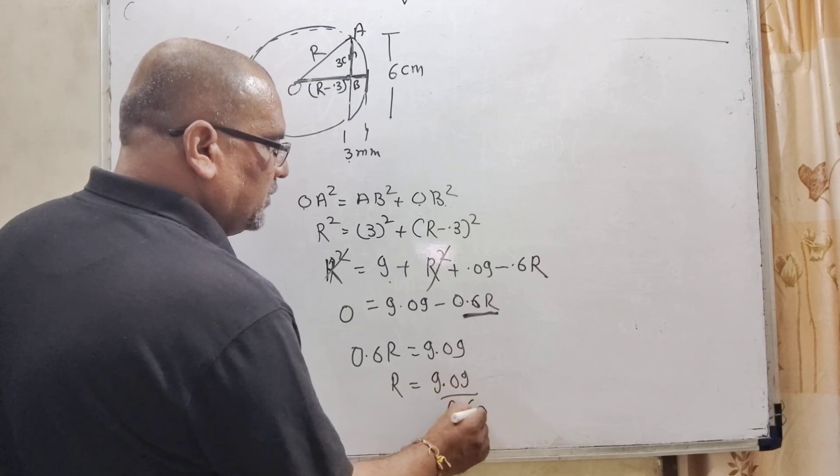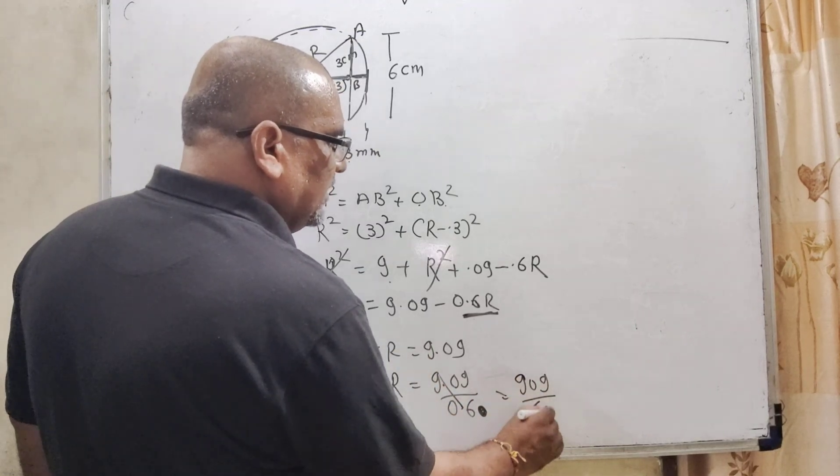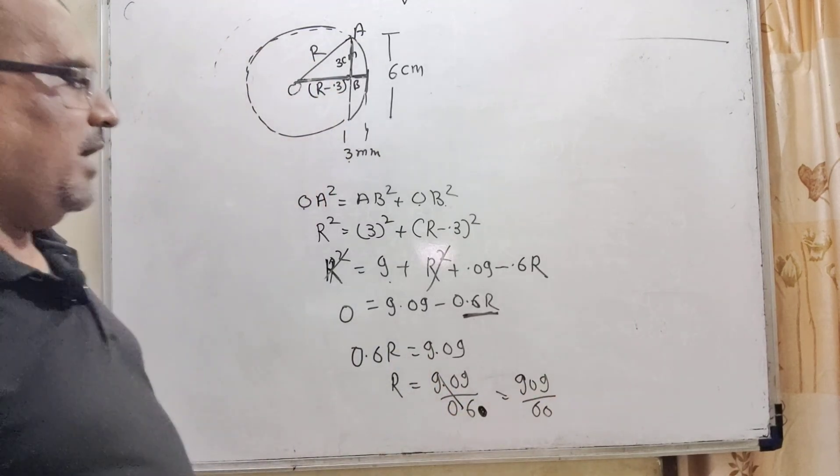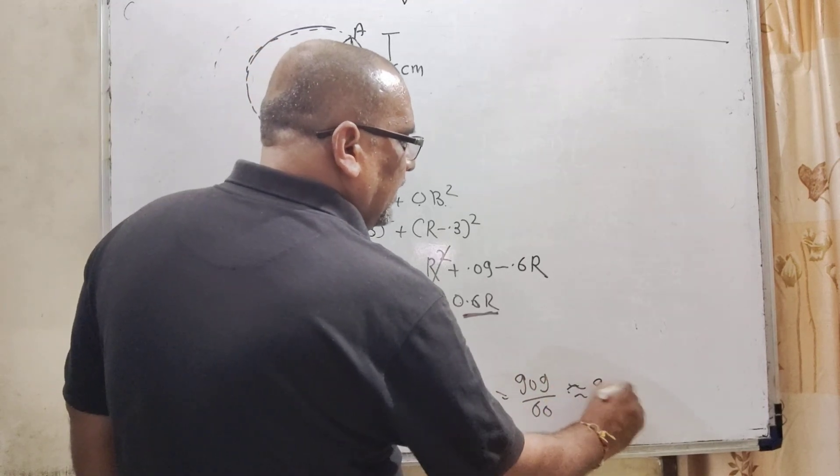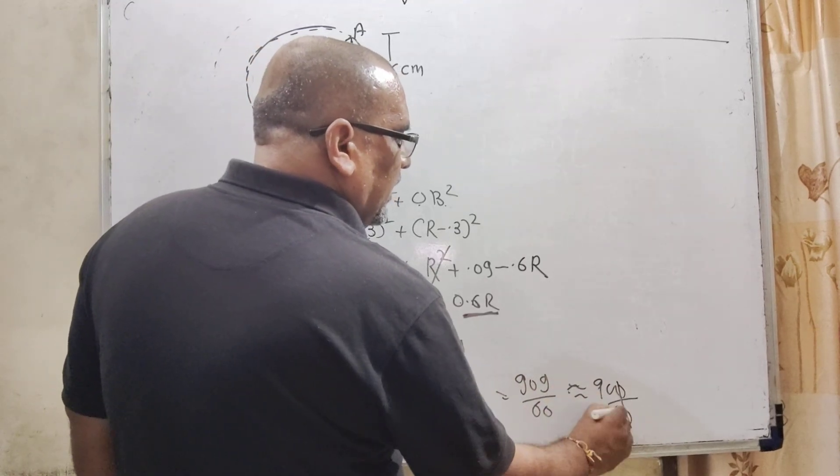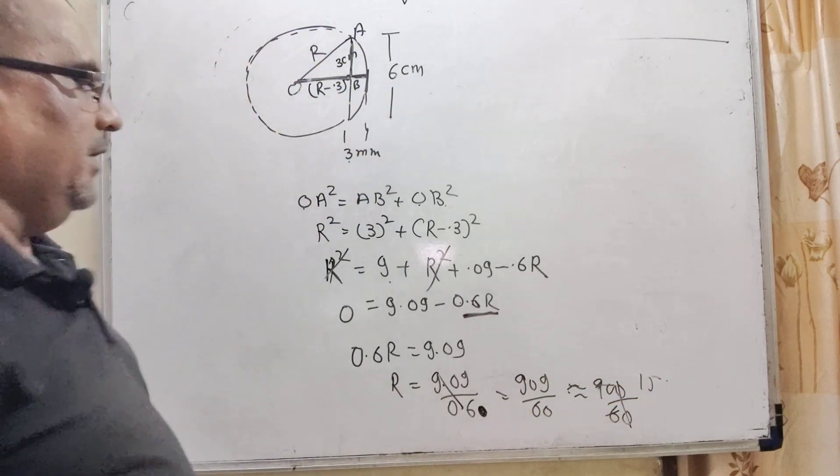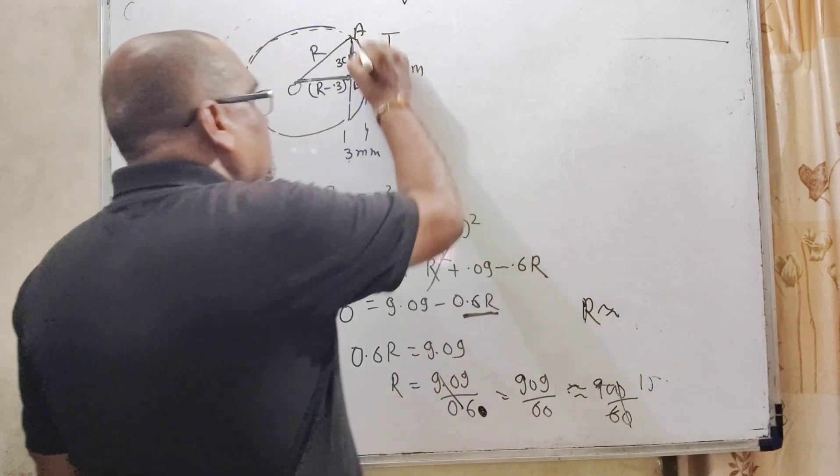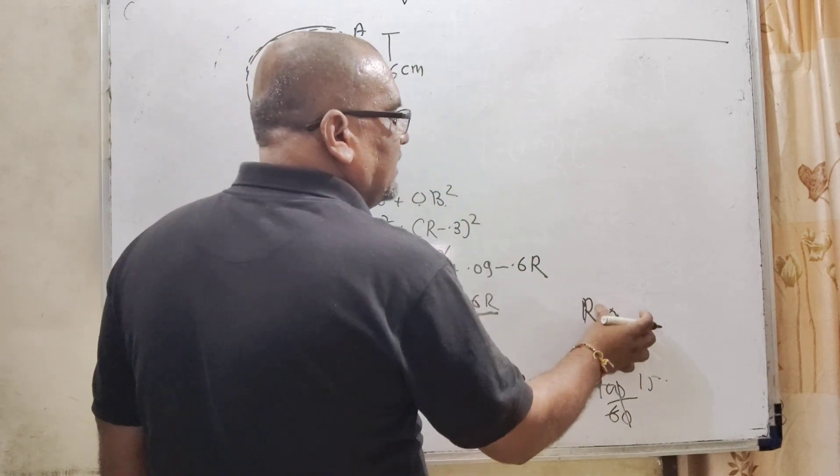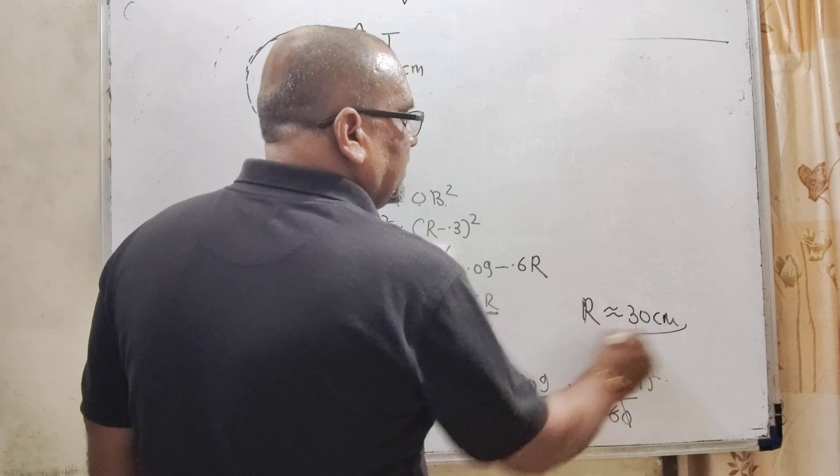Then R = 9.09 ÷ 0.6. After decimal there are 2 numbers, so equalize by using 0. Decimal cancels out. 909 ÷ 60. 900 ÷ 60 is 15. So, value of R means radius of curvature of this lens is approximately 15 cm.